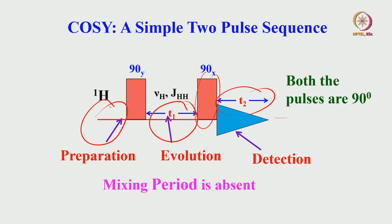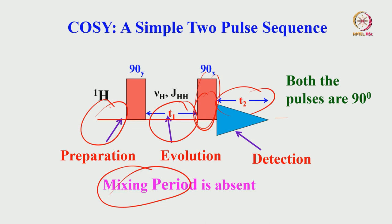You may ask: what is the mixing time here? There is no explicit mixing time — you can consider the second pulse itself as the mixing period. Mixing period is absent here. In general there are four periods, but the mixing period is optional. Some people explain the second pulse itself as the mixing period — it does not matter. So COSY is a simple two-pulse experiment.